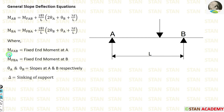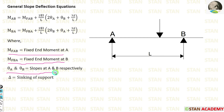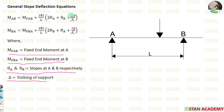Where M_AB is the fixed end moment at A, M_BA is the fixed end moment at B, θA and θB are slopes at A and B respectively, and δ is the settlement of the supports. If nothing is mentioned about settlement of the supports, we don't have to consider those terms. In this question also, nothing is mentioned, so we don't consider them — only 2θA + θB and 2θB + θA.